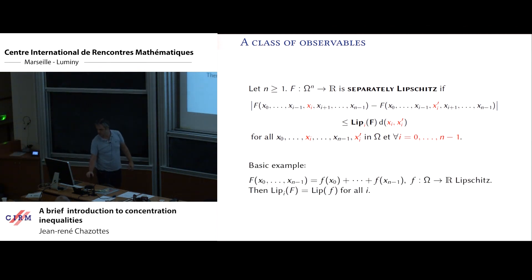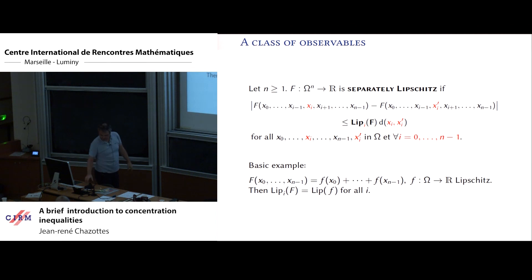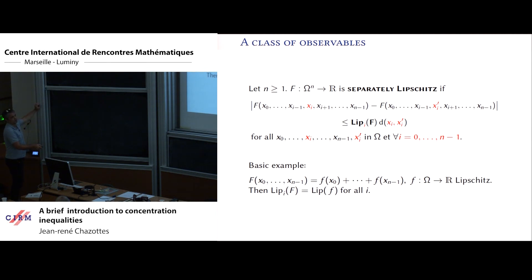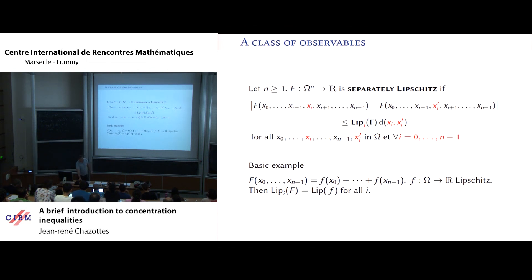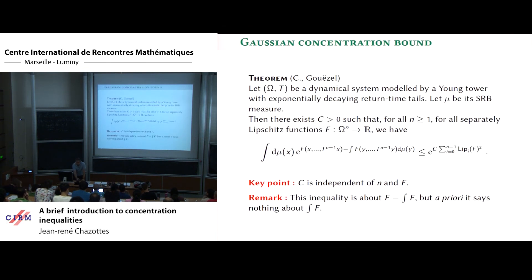The simplest basic example is the Birkhoff sum of a Lipschitz function from omega to R: then Lip_i(F) equals the Lipschitz constant of f for each i. But otherwise f can be very complicated — if you can estimate these Lip_i(F) coefficients, that's all you need. The function F can be whatever you want.